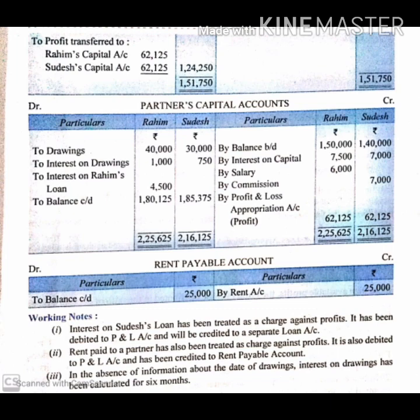Our rent payable account has also been shown to you — how it will be prepared. In the working notes, interest on partners' loan has been treated as a charge against profit; it has been debited to the profit and loss account and will be treated in a separate loan account. Rent paid to a partner has also been treated as a charge against profit; it is also debited to the profit and loss account.